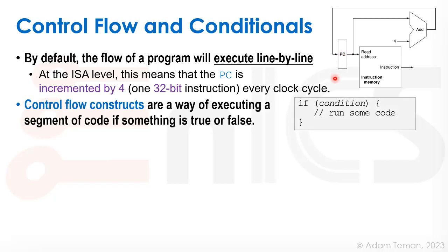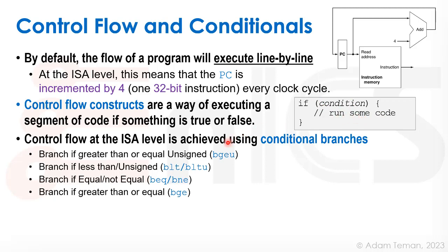Control flow constructs are a way of executing a segment of code if something is true or false. If there's some condition, then run some code. At the ISA level, we achieve this using conditional branches.